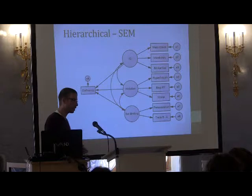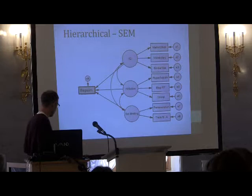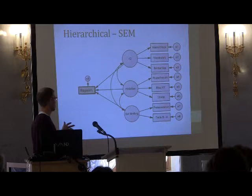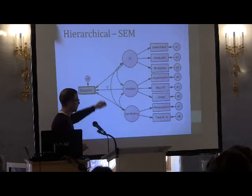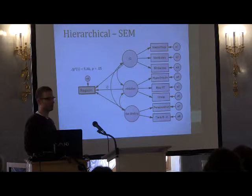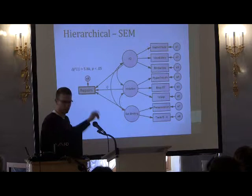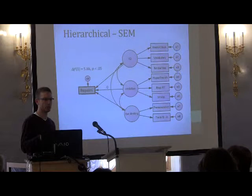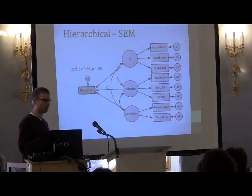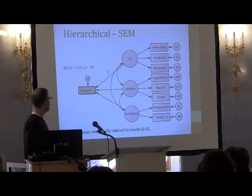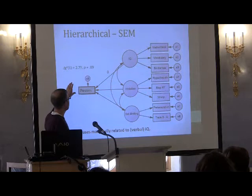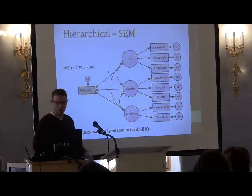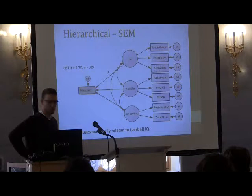Following up on the finding from the previous study regarding repair disfluencies, we confirmed that result in typically developing individuals. Setting the pathway from inhibition to repairs equal to zero produces a significant decrease in model fit. The factor loading from inhibition to repairs is about .33, suggesting that about one-third of variance in people's tendency to produce repairs can be accounted for by individual differences in inhibitory control. We also got a marginal effect with silent pauses — model fit marginally decreased when the pathway from intelligence to silent pauses was set to zero, suggesting silent pauses are related to verbal IQ.